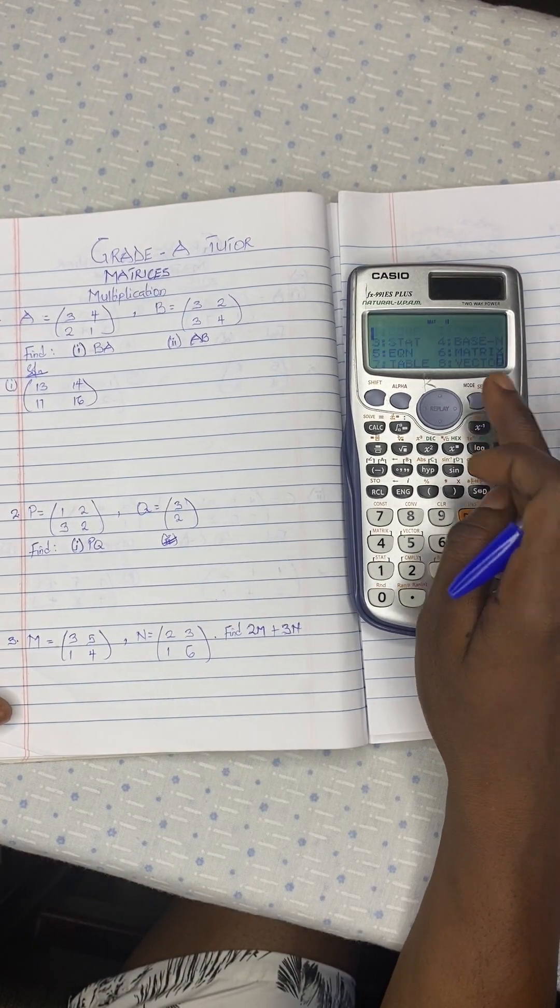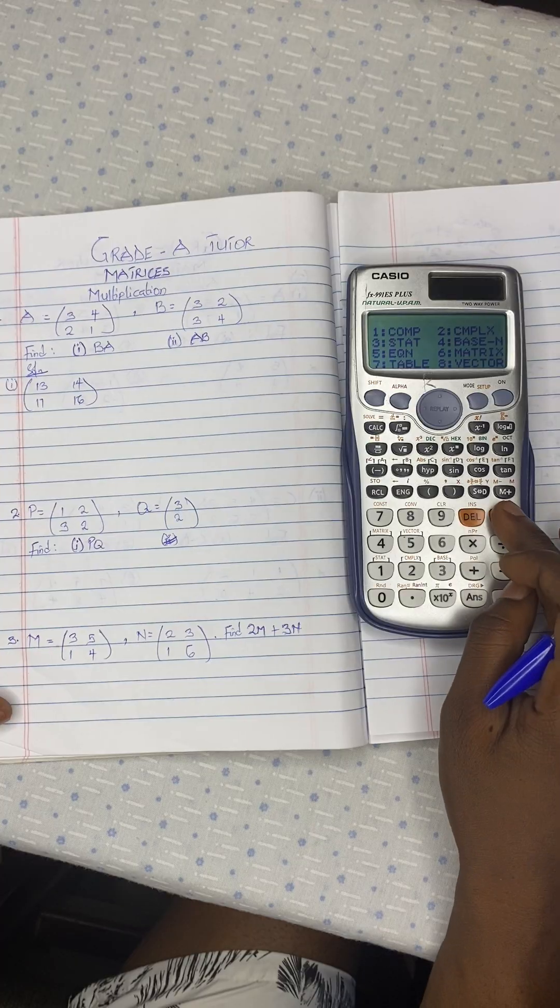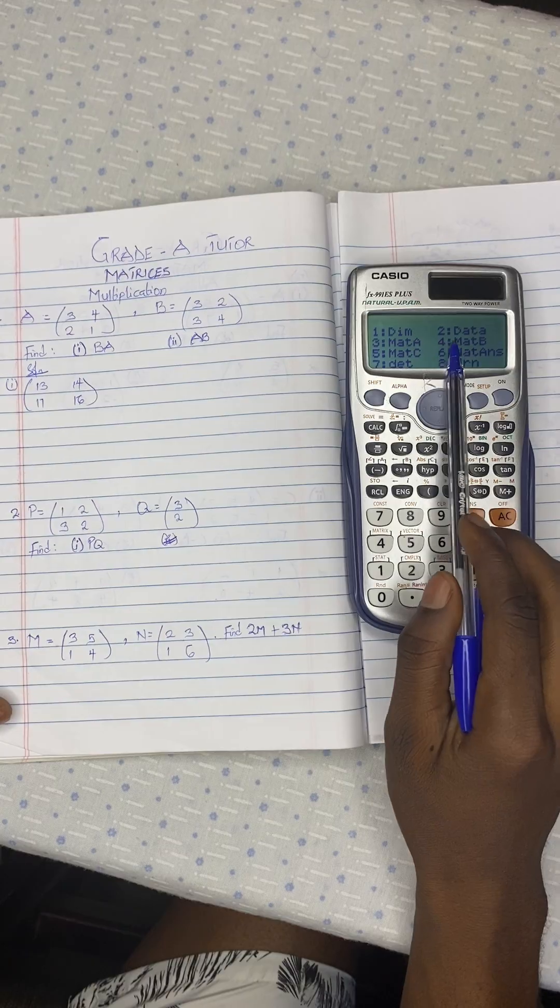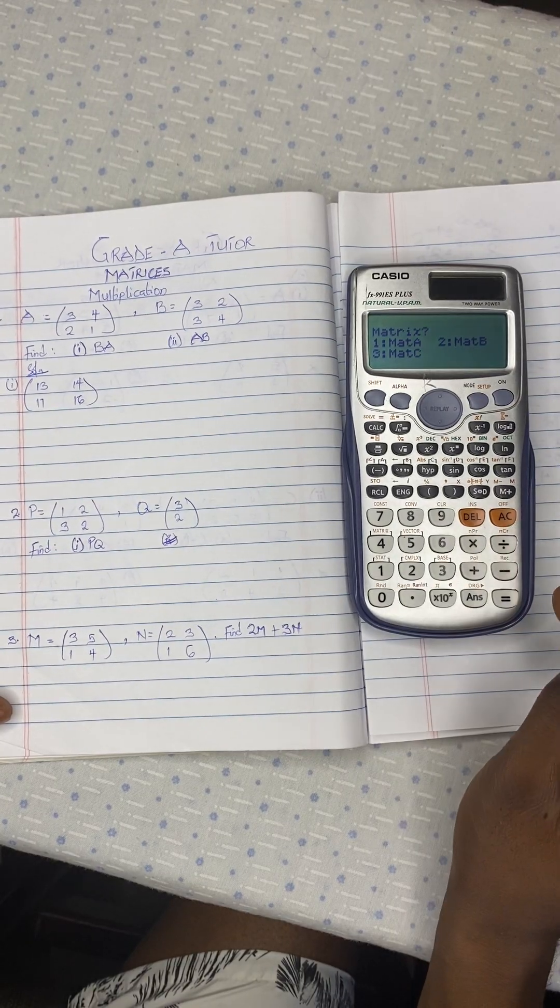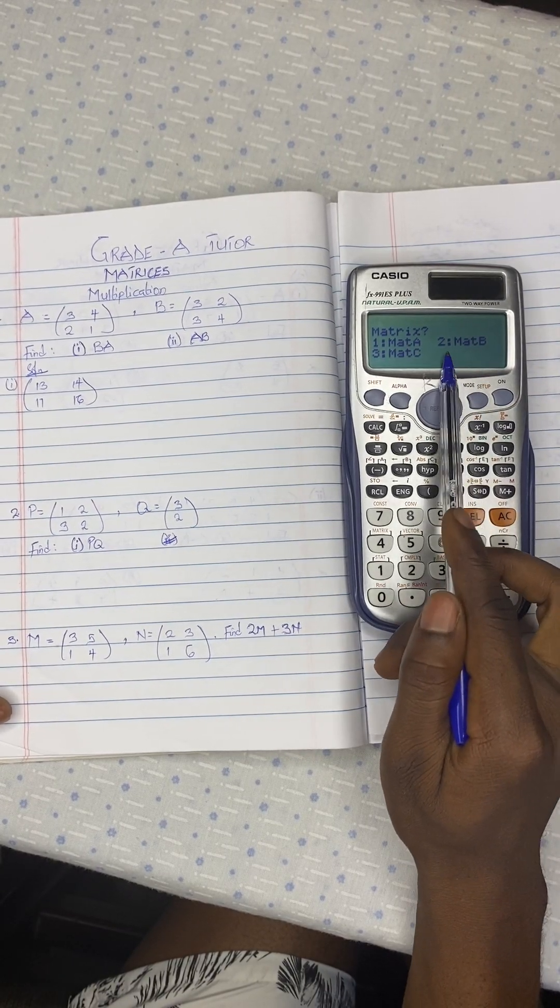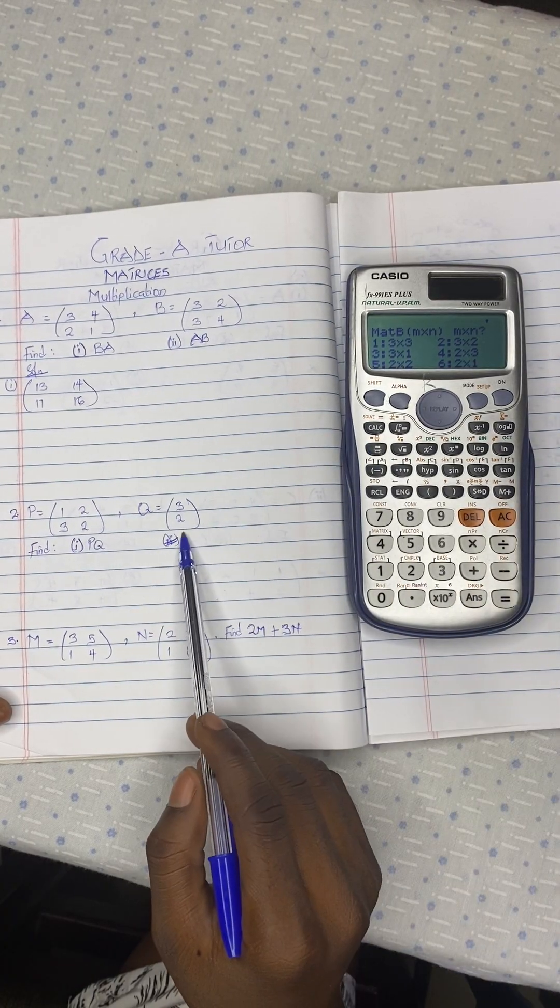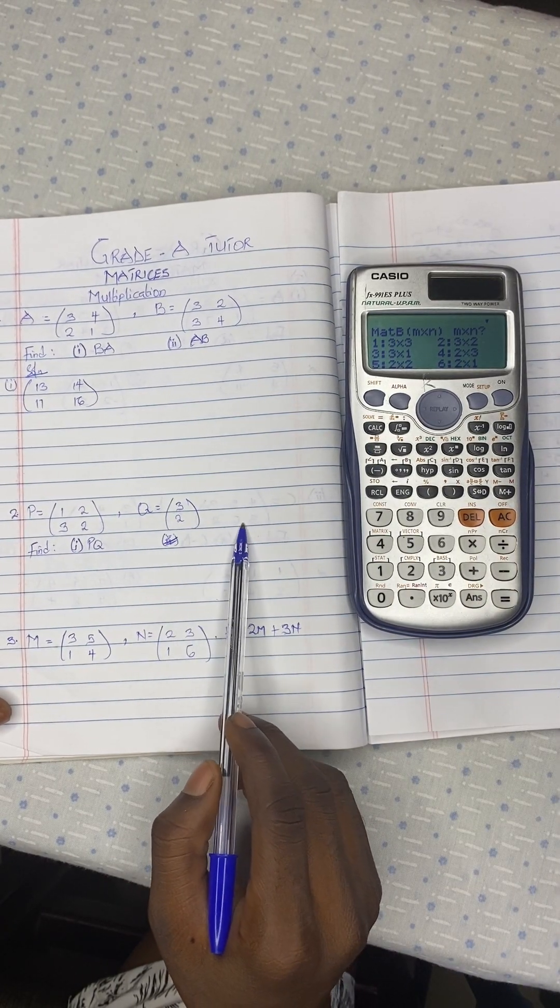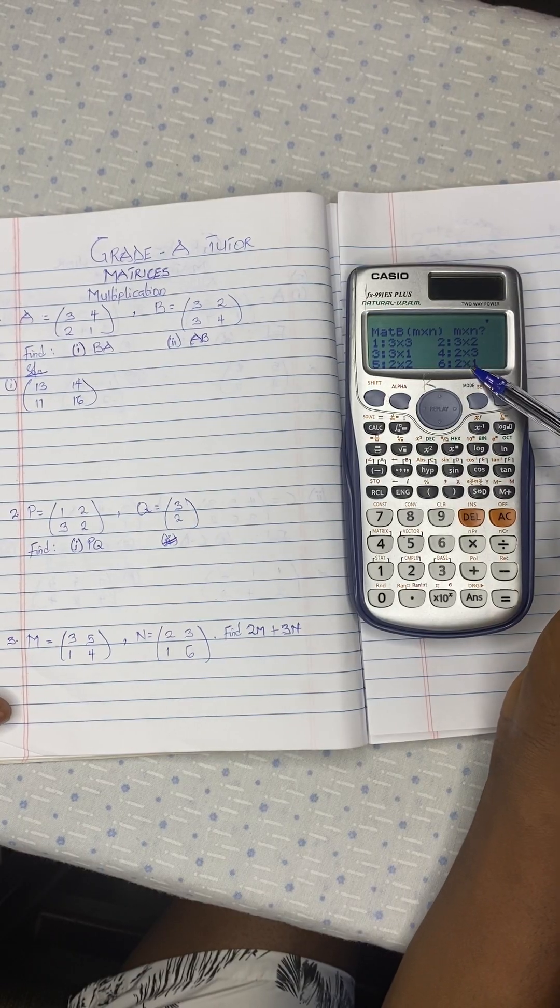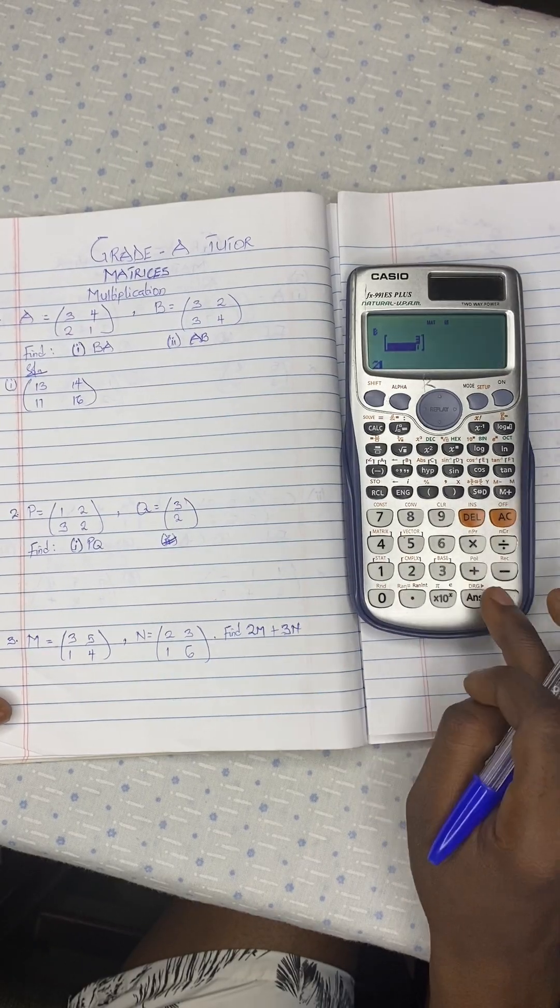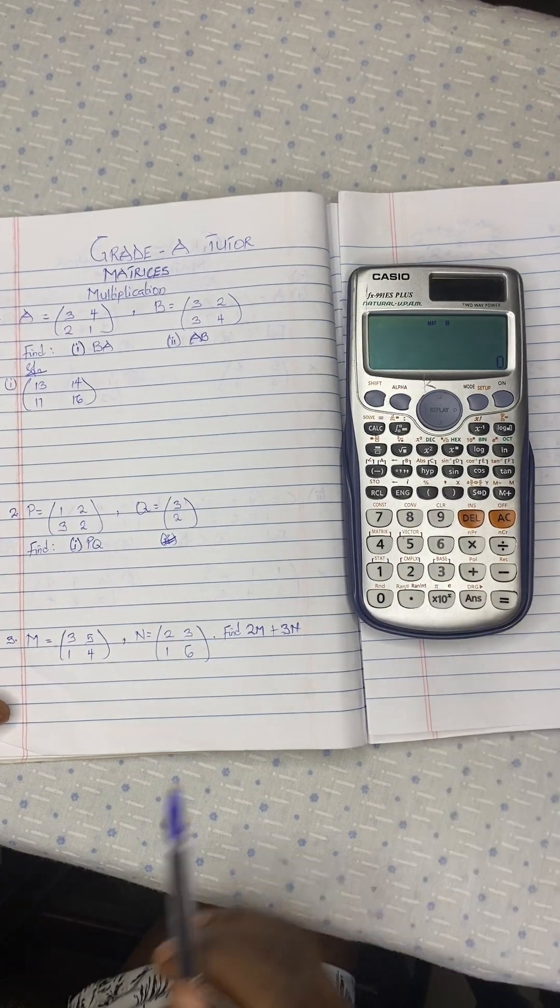So you press on shift 4, not mode. Then you come to 2, your data. Then you choose option 2. Now what is it? It is 2 by 1. And that is what you see over here, option 6. So 3, 2. Then you press here to save it.